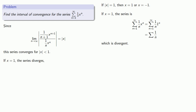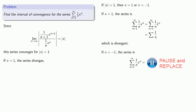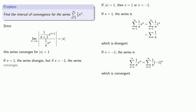If x equals negative 1 our series becomes the alternating harmonic series, which is convergent. So we should include x equals negative 1 in our interval of convergence, and that gives us our interval of convergence.